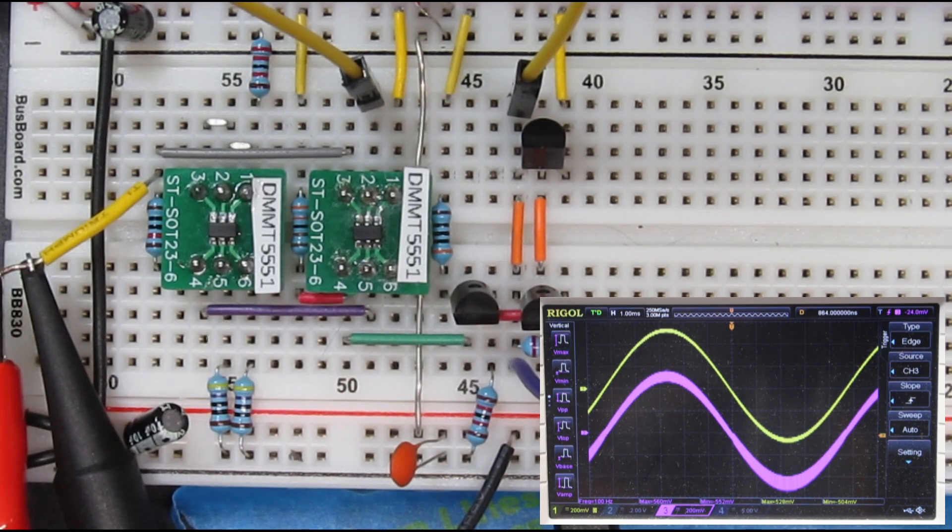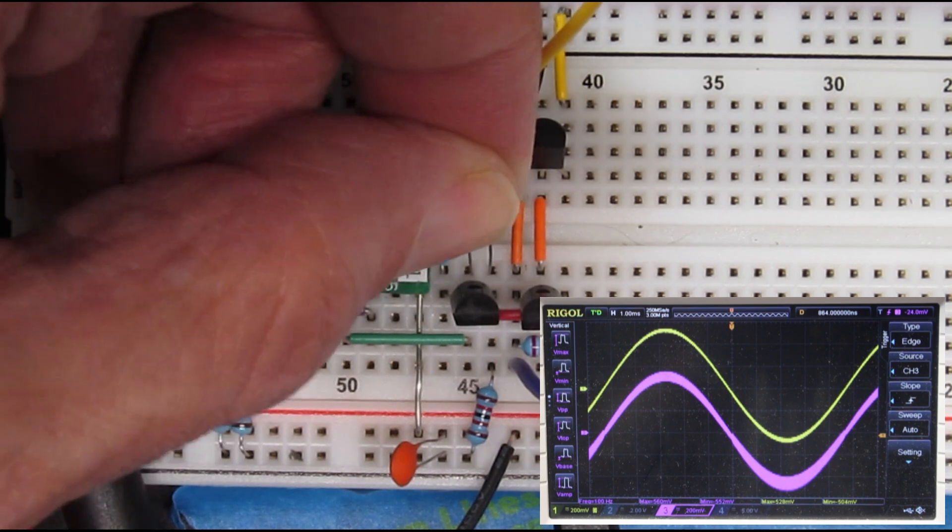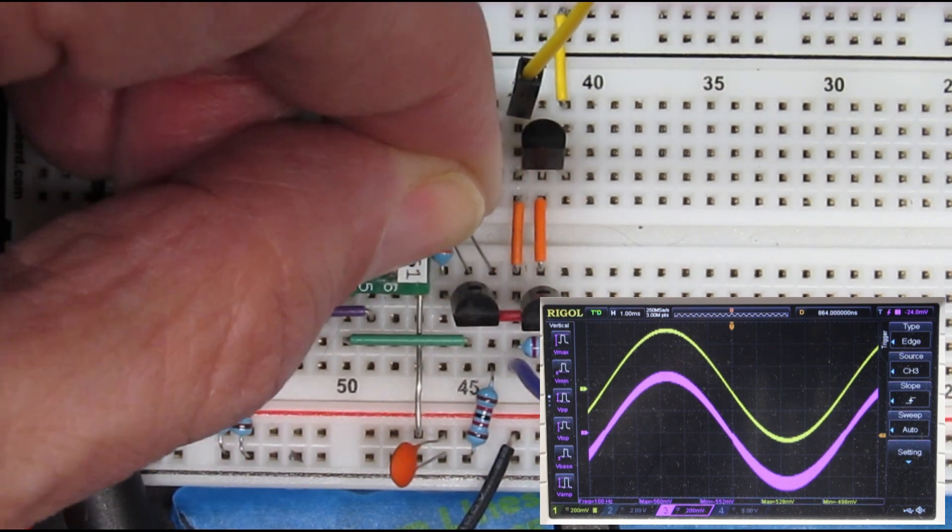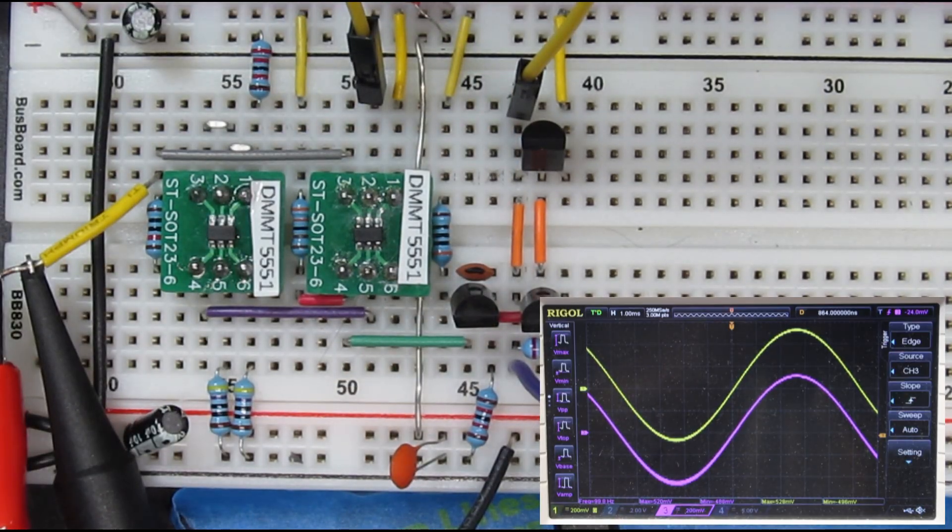I'll try 33 pF between the base and collector of the gain stage. And the signal cleans right up, so I was right in my guess that the thing was oscillating.